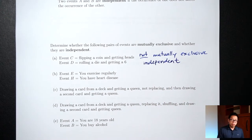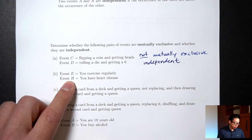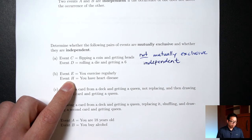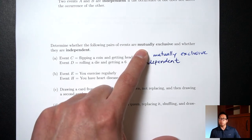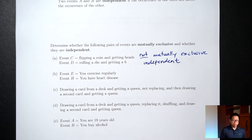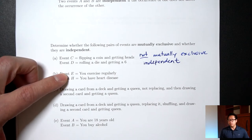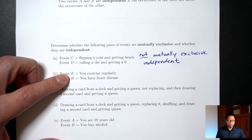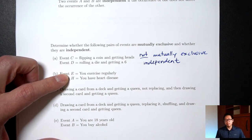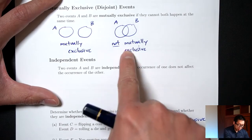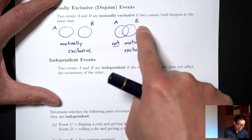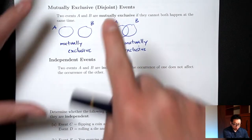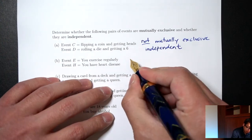Part B: event E is you exercise regularly; event H is you have heart disease. First, let's ask about mutually exclusive. Can these two things happen at the same time? Can you exercise regularly and at the same time have heart disease? Yes, it's possible. So if your answer is yes, they both can happen at the same time — there's an overlap. This will be not mutually exclusive.